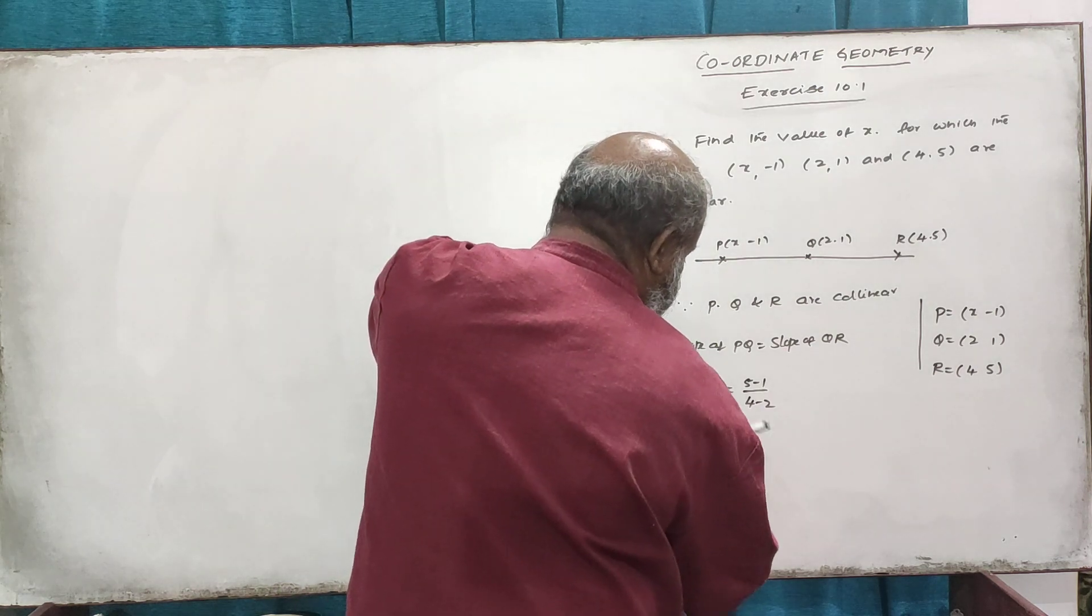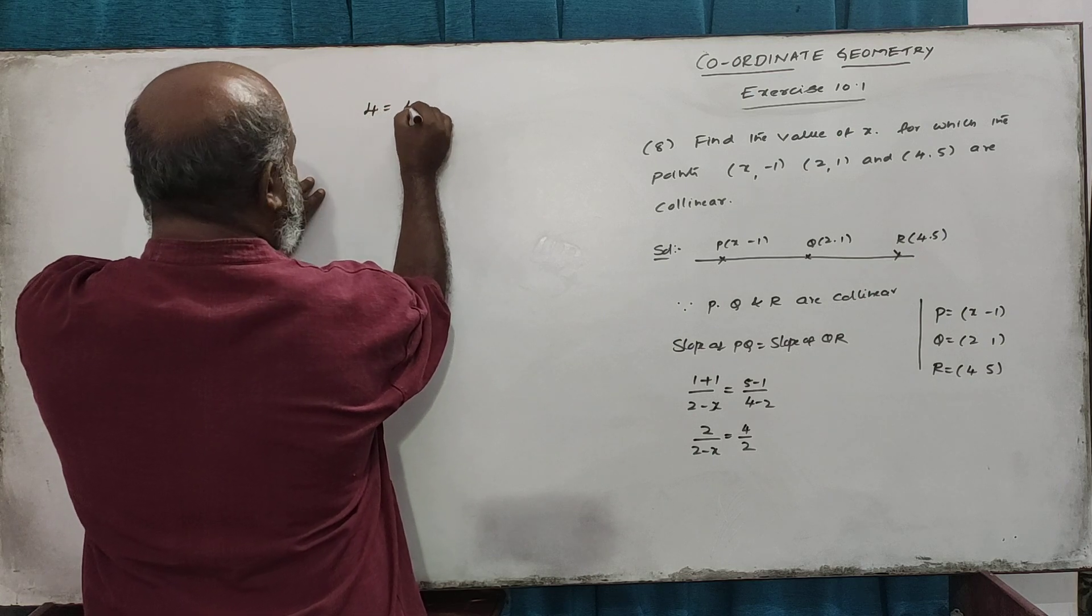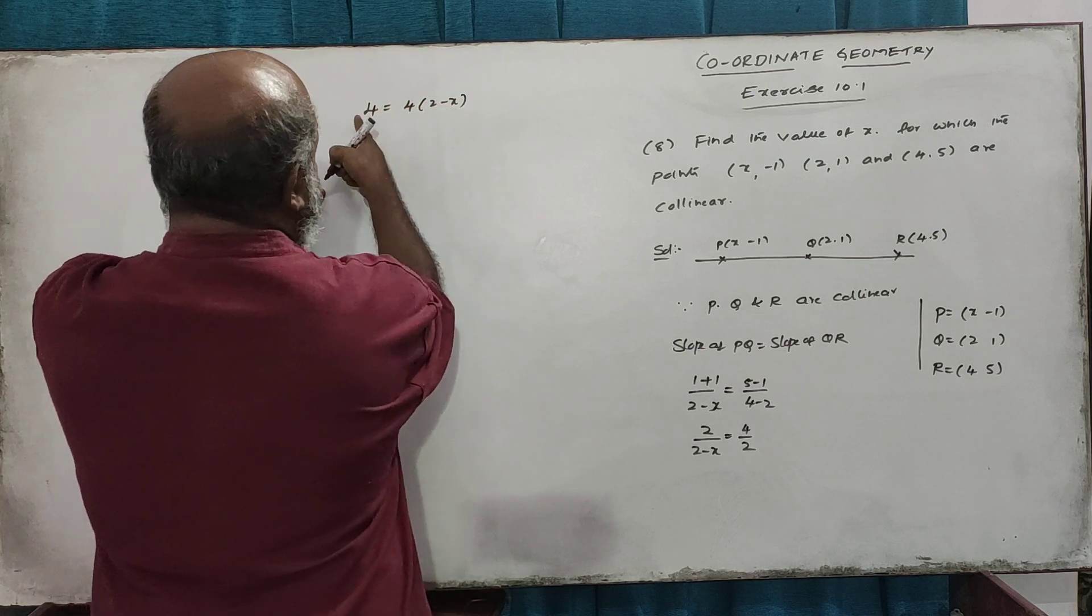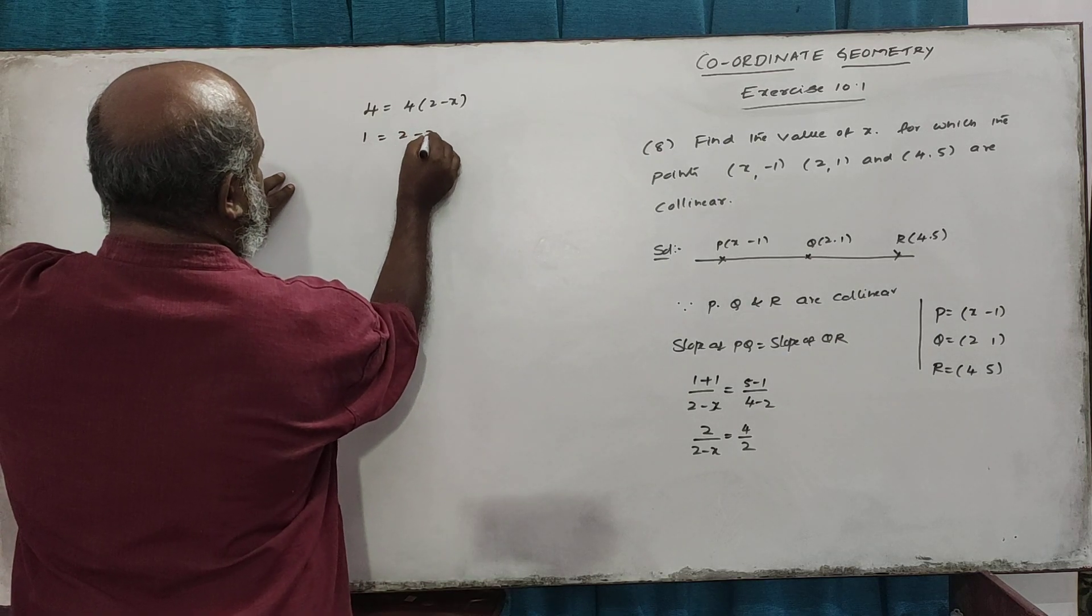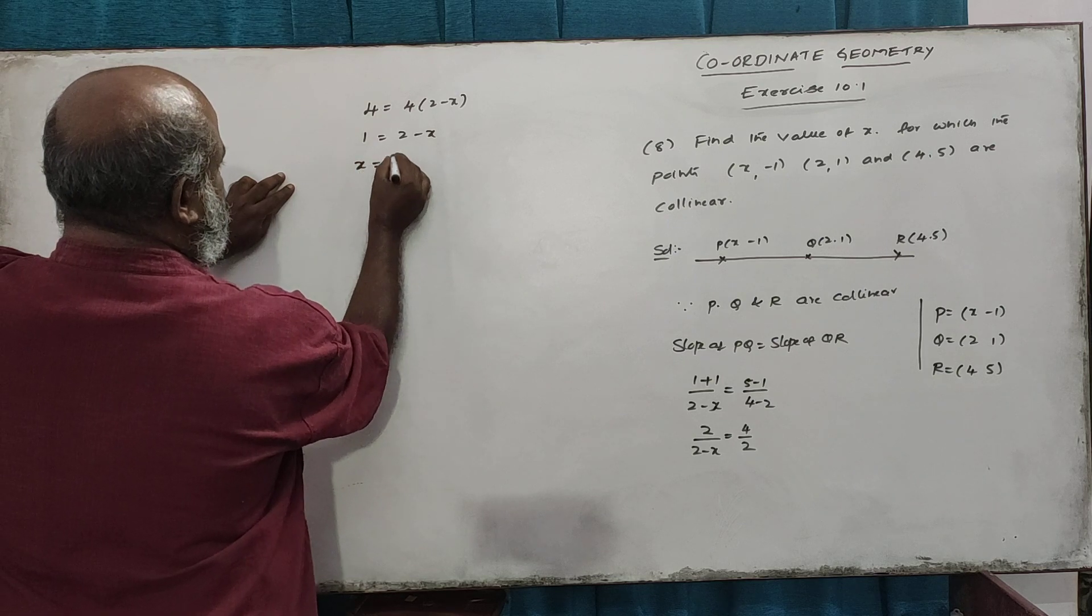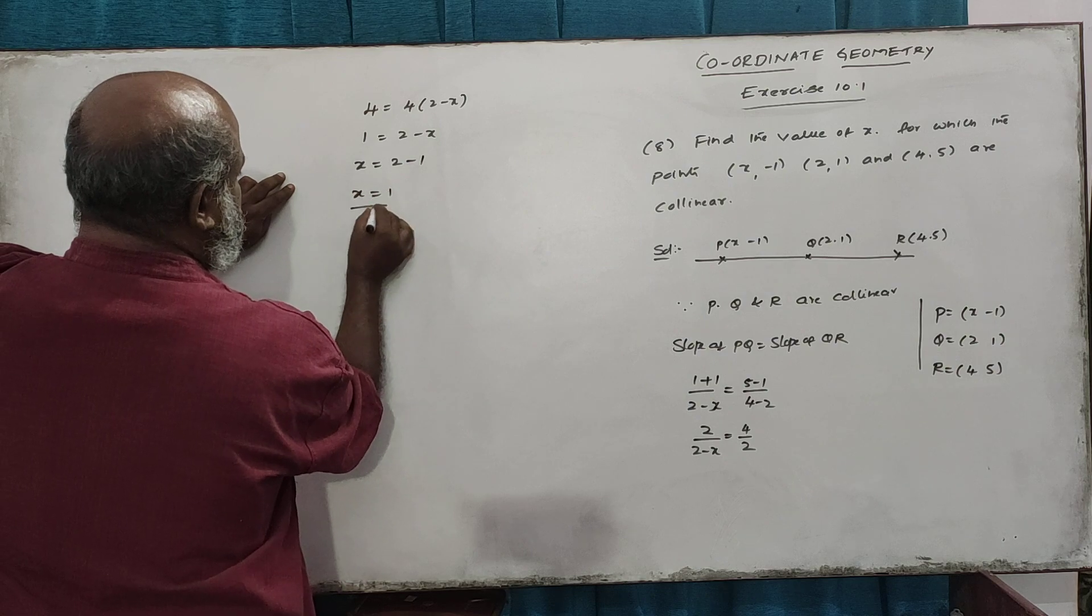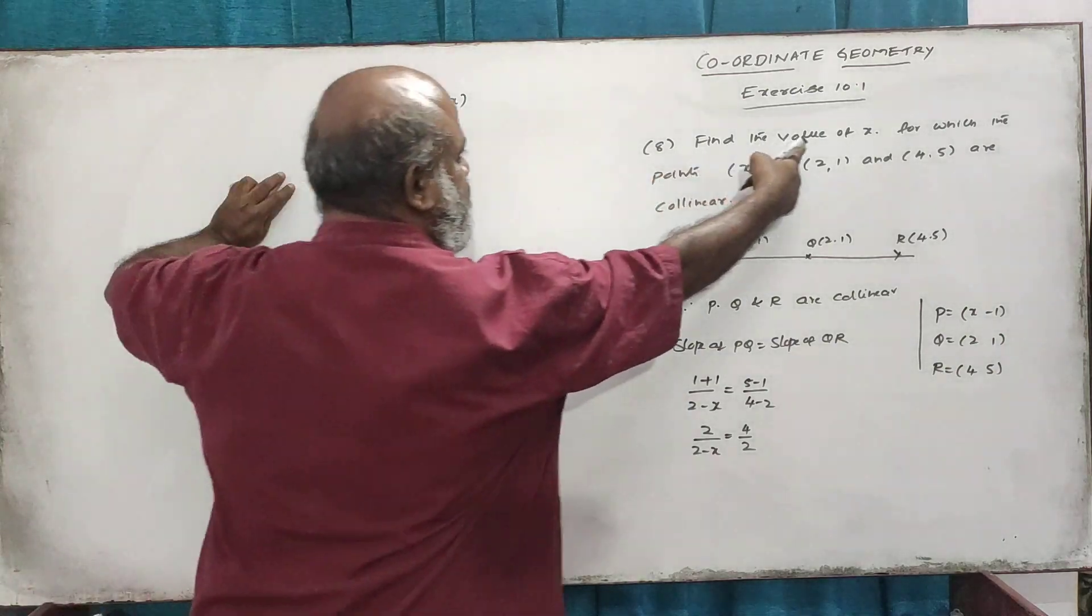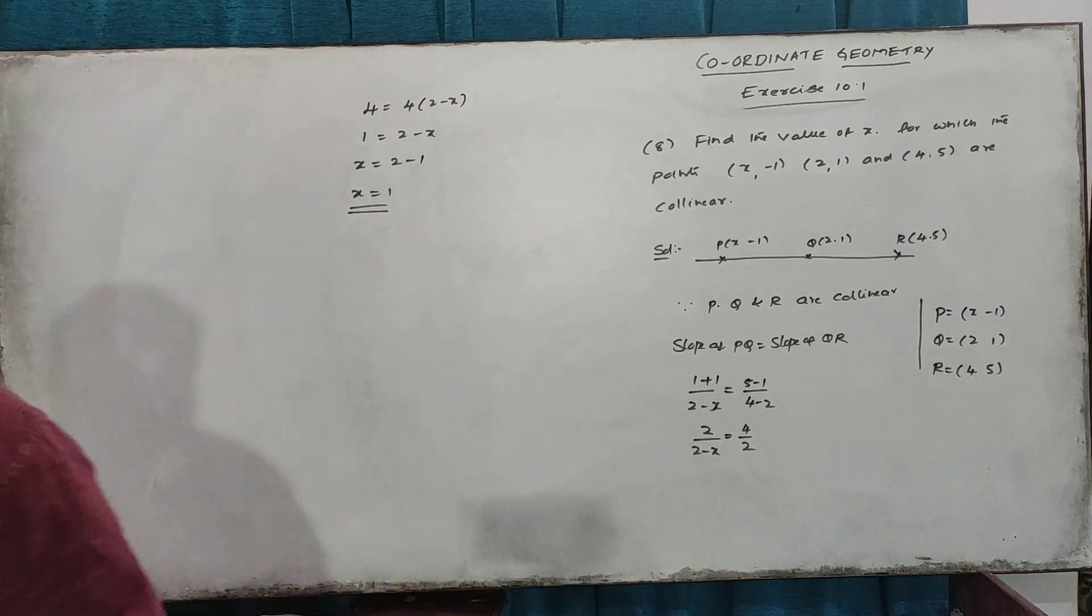Now we do cross multiplication. 2 times 2 equals 4, so 4 equals 4 times 2 minus x. Solving this gives us x equals 0. That's all, thanks.